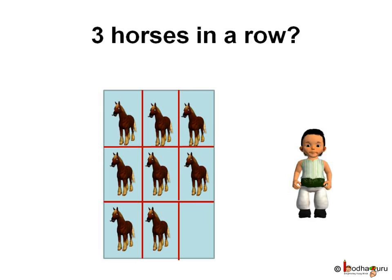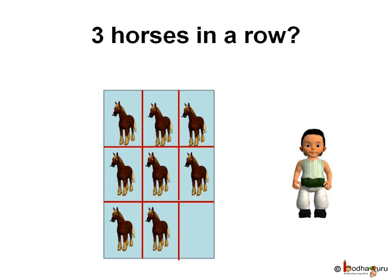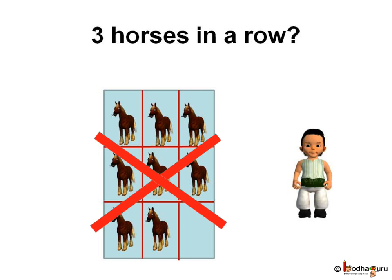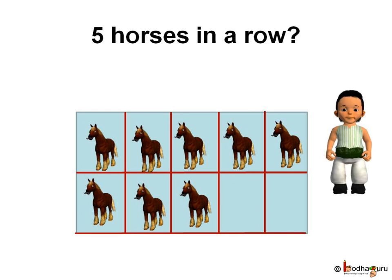The space is getting wasted as not all the rows have the same number of horses. Then he arranged 4 horses in each row. The number of rows are 2 and the total number of horses is equal to 4 into 2, which is equal to 8.